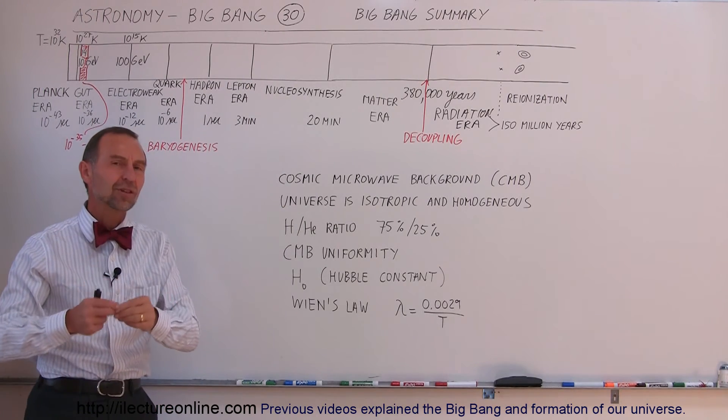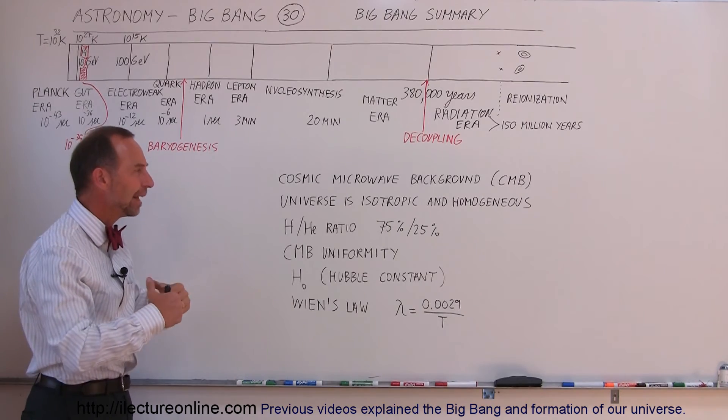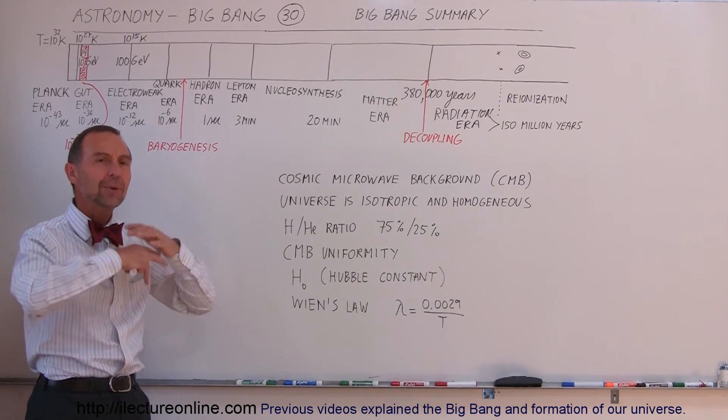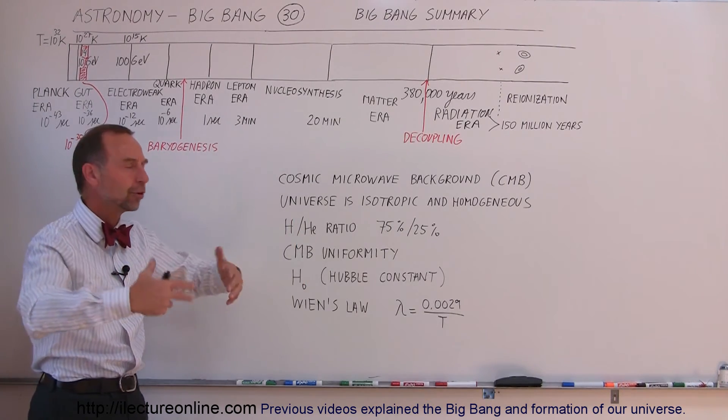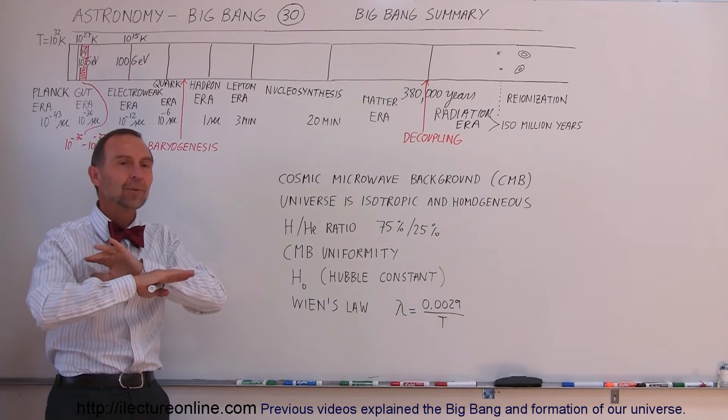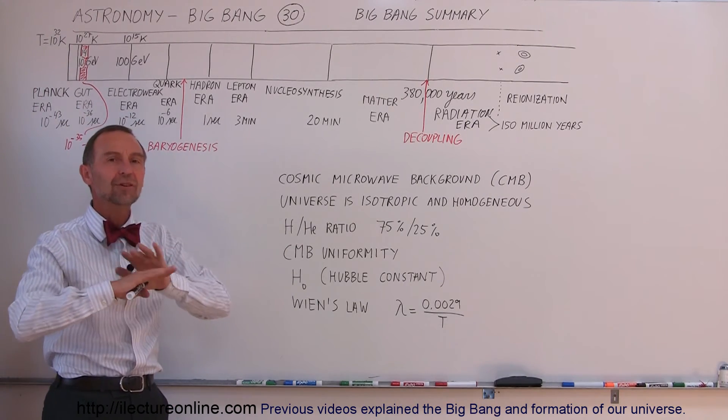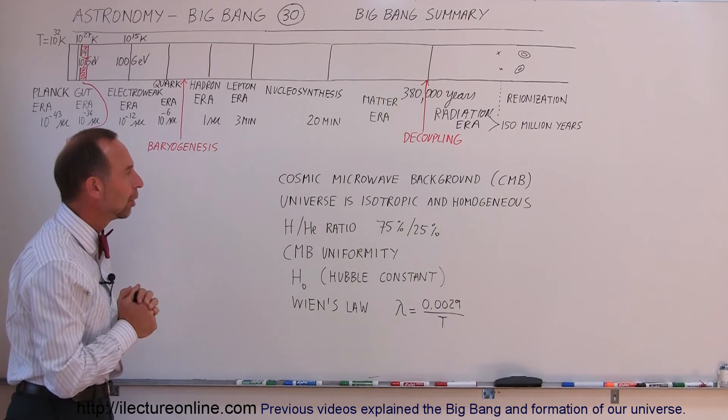We also know the Universe is extremely isotropic and homogeneous. Again, a result of the way the radiation permeated through the Universe and how the inflationary period makes sure that the density was as equal as possible, as even as possible everywhere throughout the Universe.